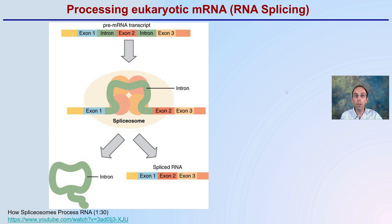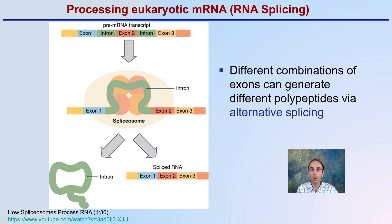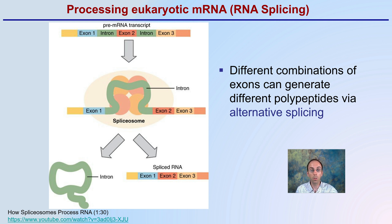Processing eukaryotic mRNA through RNA splicing: different combinations of exons can generate different polypeptides via alternate splicing. We just saw that — where we have our pre-messenger RNA, and through different splicing and different combinations of those exons, different orders of exons will create different end products, in this case polypeptides known as proteins.